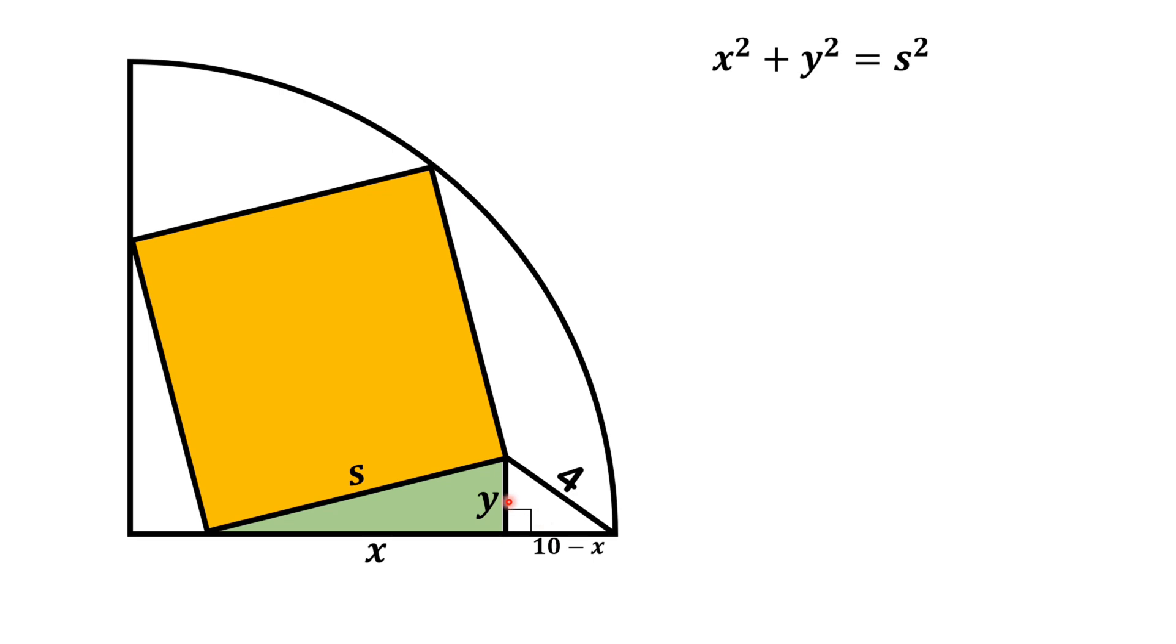Now, from this small triangle, which is also a right triangle, we can write 10 minus x square plus y square is equal to 4 square.